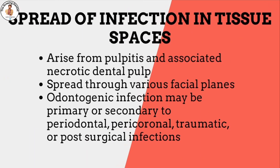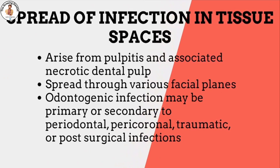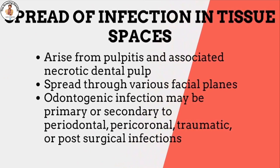Infections of the teeth have plagued humans constantly, despite efforts for better oral hygiene. They arise from pulpitis and associated necrotic dental pulp, that initially begins on the tooth surface as dental caries. These are localized or they quickly spread through various facial planes. Odontogenic infections may be primary or secondary to periodontal, pericoronal, traumatic, or post-surgical infections.